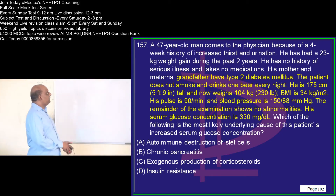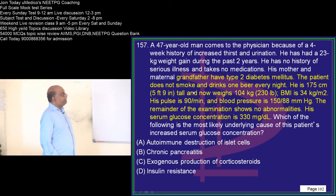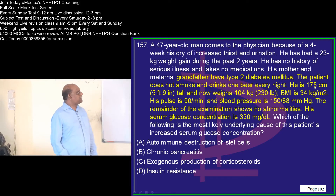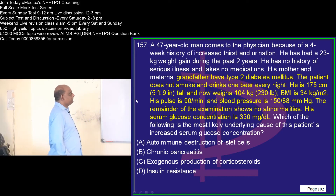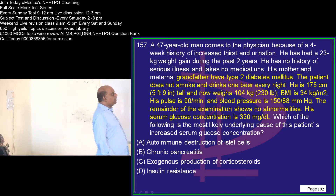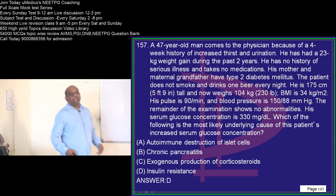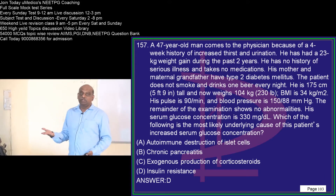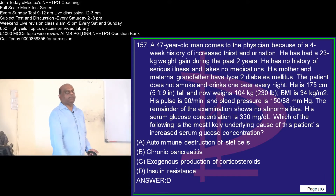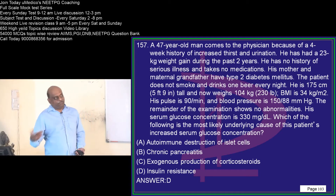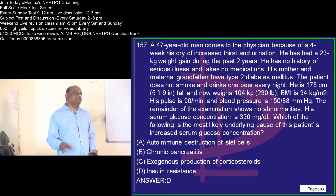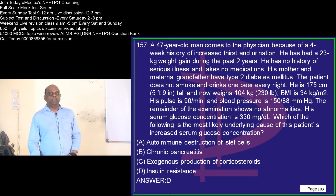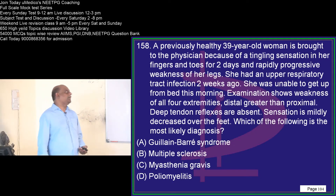A 47-year-old with a family history of Type 2 diabetes presents with an elevated serum glucose. Type 2 diabetes is due to insulin receptor-level resistance, whereas Type 1 diabetes is due to insulitis and destruction of the beta cells of the pancreas.